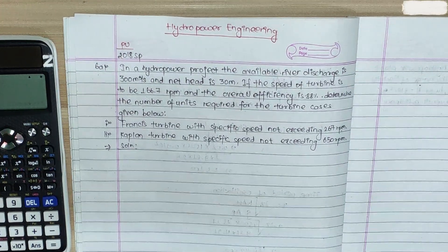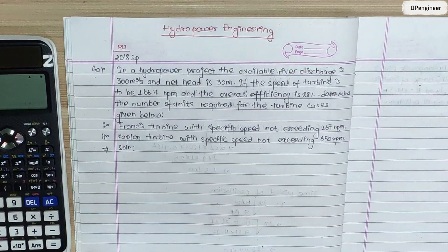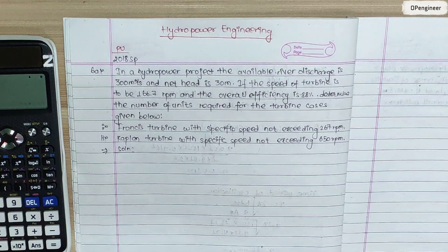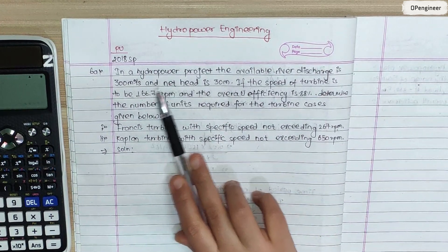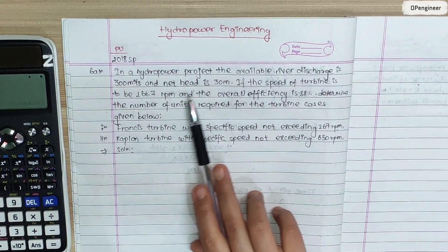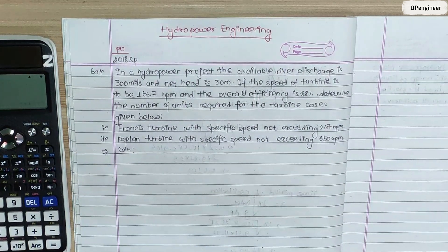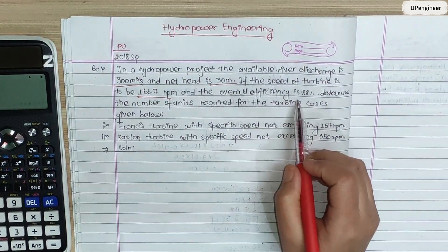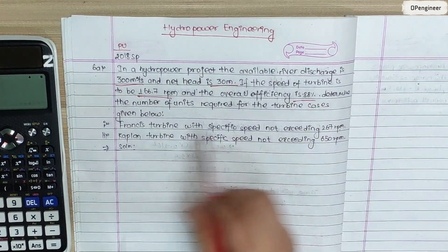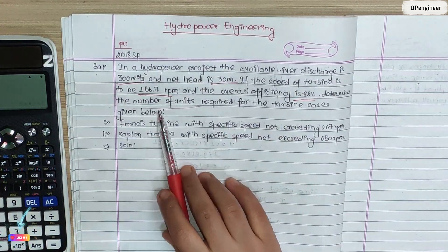Today we are going to talk about hydropower engineering in Spring 2018. The available river discharge is 300 cubic meters per second and net height is 30 meters. If the speed of turbine is 166.7 rpm and the overall efficiency is 88%, determine the number of units required for the turbine cases given below.